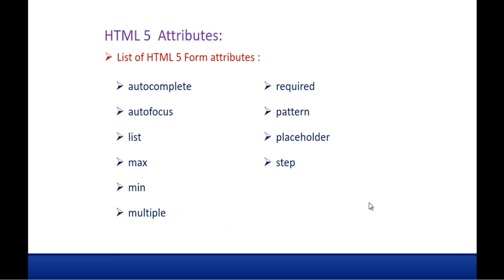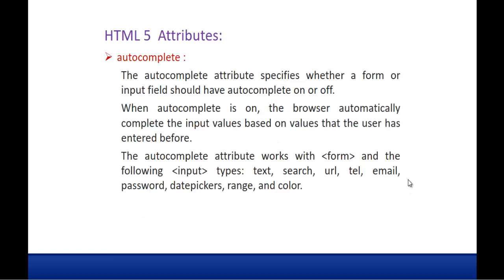Without wasting much time let me jump into the Auto-Complete attribute. The Auto-Complete attribute specifies whether a form or input field should have Auto-Complete on or off. When Auto-Complete is on, the browser automatically completes the input values based on values the user has entered before. Auto-Complete works with the form and the following input types: Text, Search, URL, Telephone, Email, Password, Date Pickers, Range and Color.